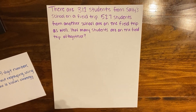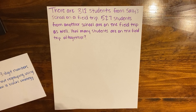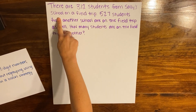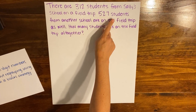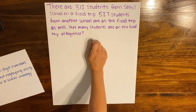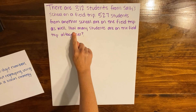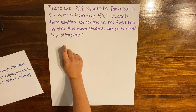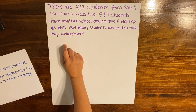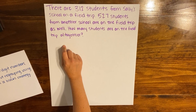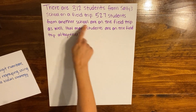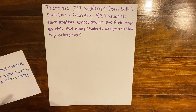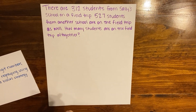Before I start solving, I need to stop and think about what this word problem is asking me. I know that I have 312 students from Sally School and 527 students from another school on the field trip. The question asks how many students are on the field trip altogether, so I'm going to have to combine the numbers of students from both schools.